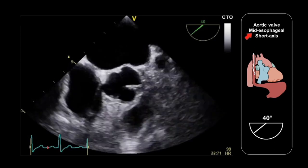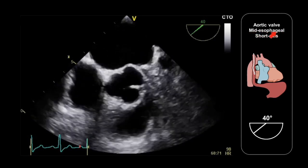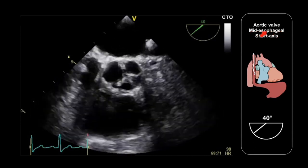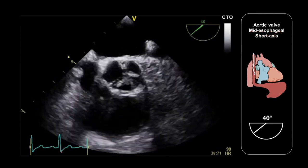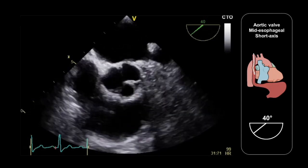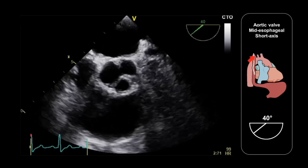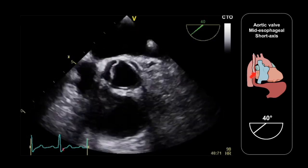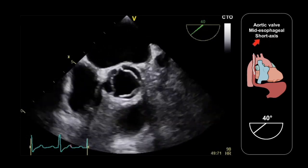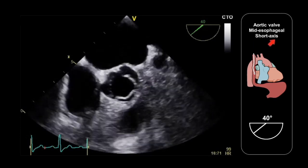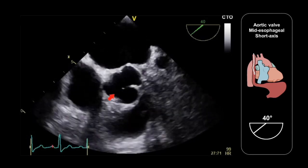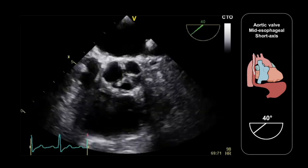We'll describe which TEE probe location we've used — in this case, the mid-esophageal location — and we'll also represent that graphically using an image in the centre of the sidebar, showing where the TEE probe is located in relation to the structures around it. We'll also name the view; this is known as the short axis view of the aortic valve because the valve is seen en face in the image.